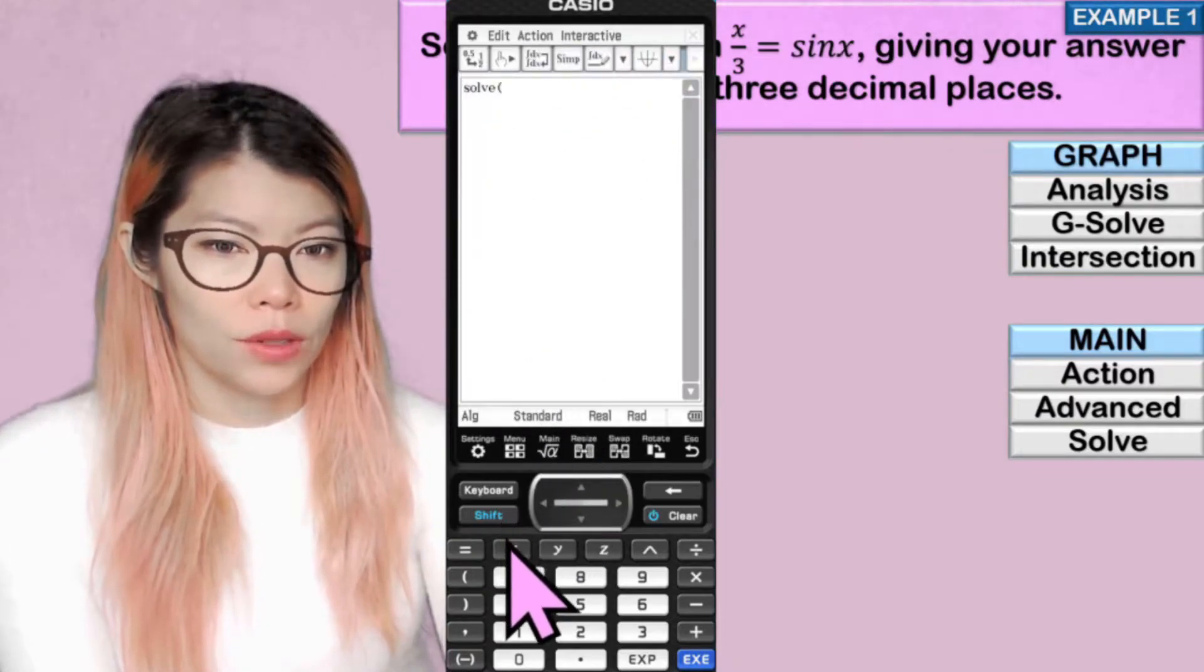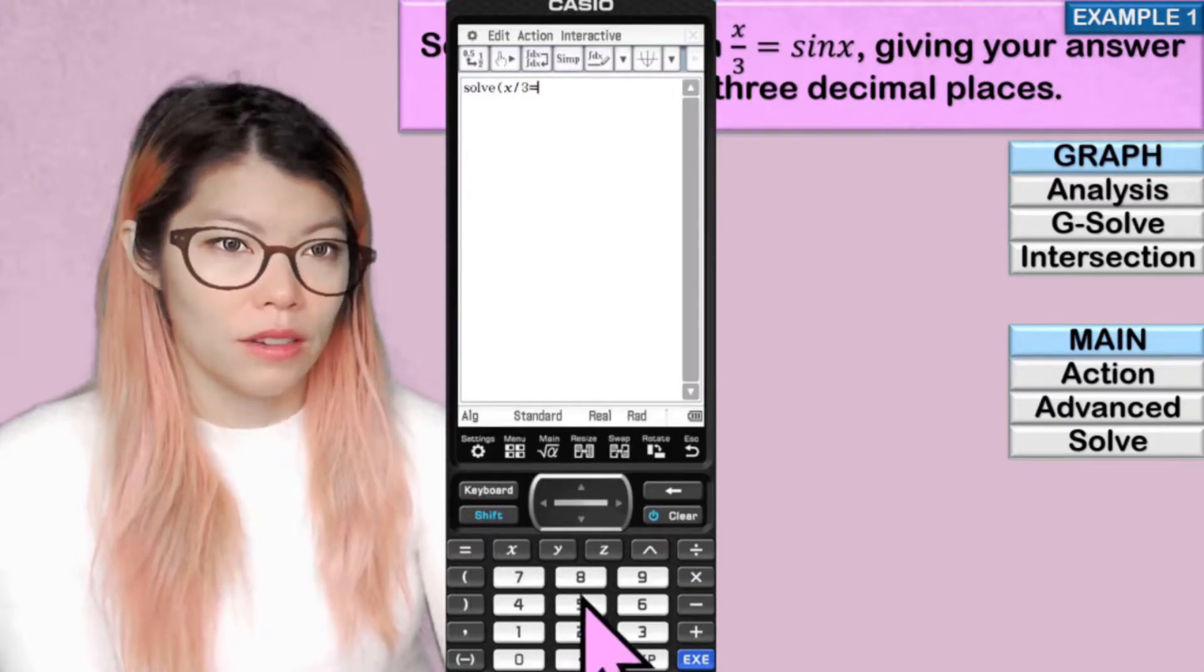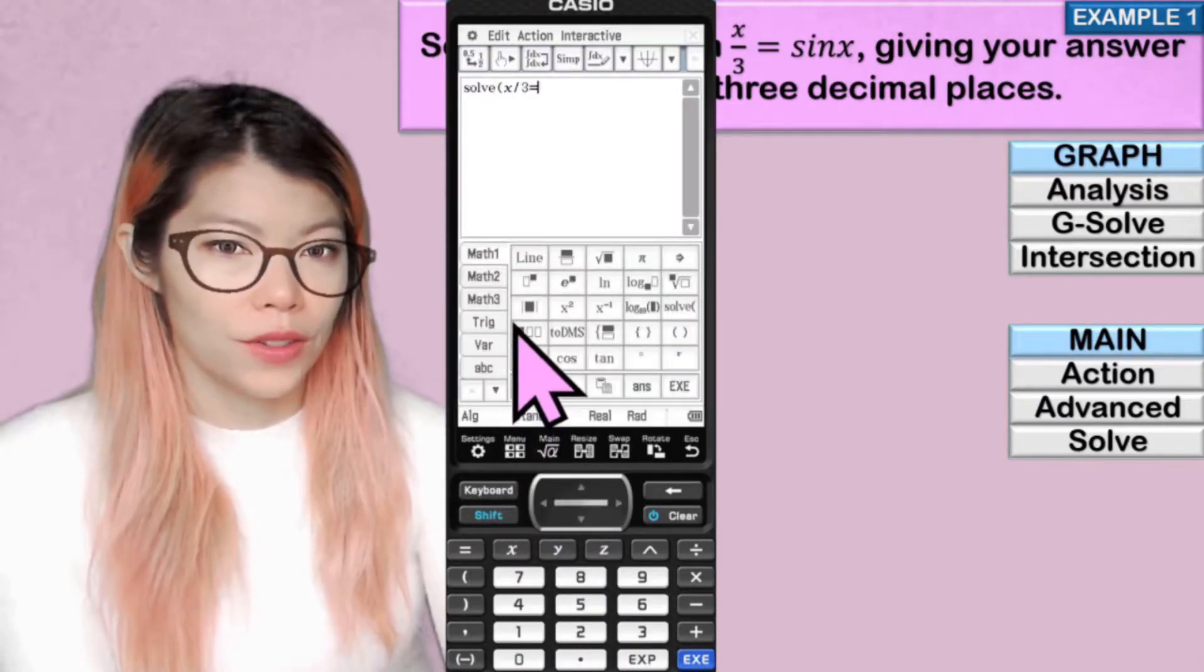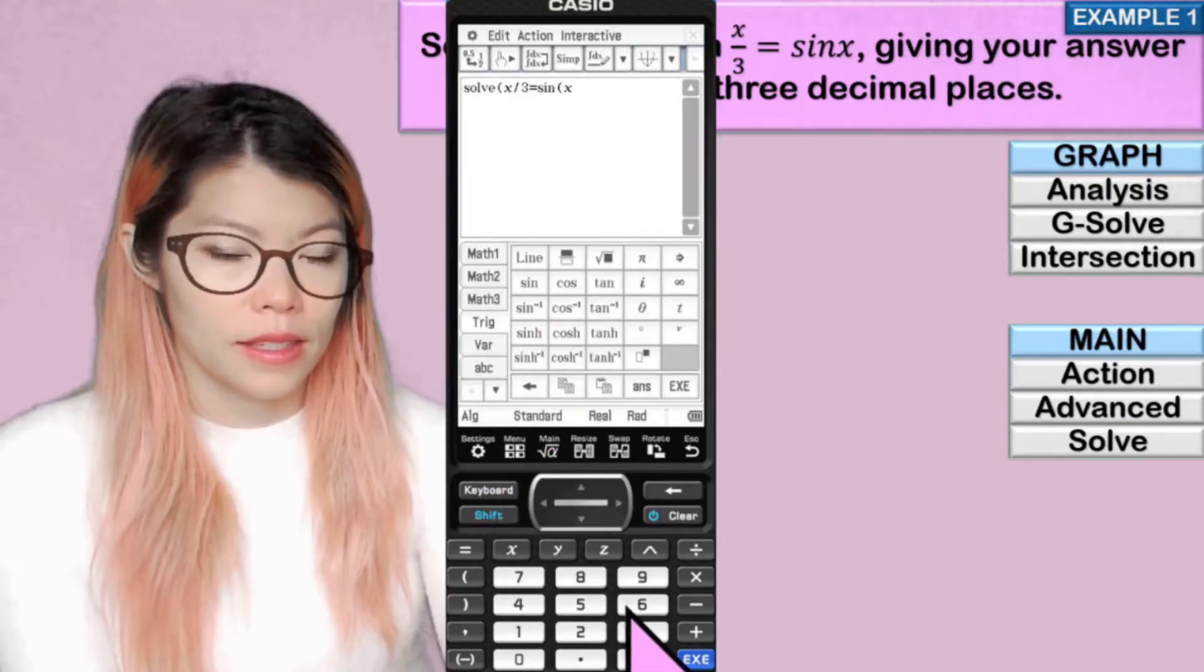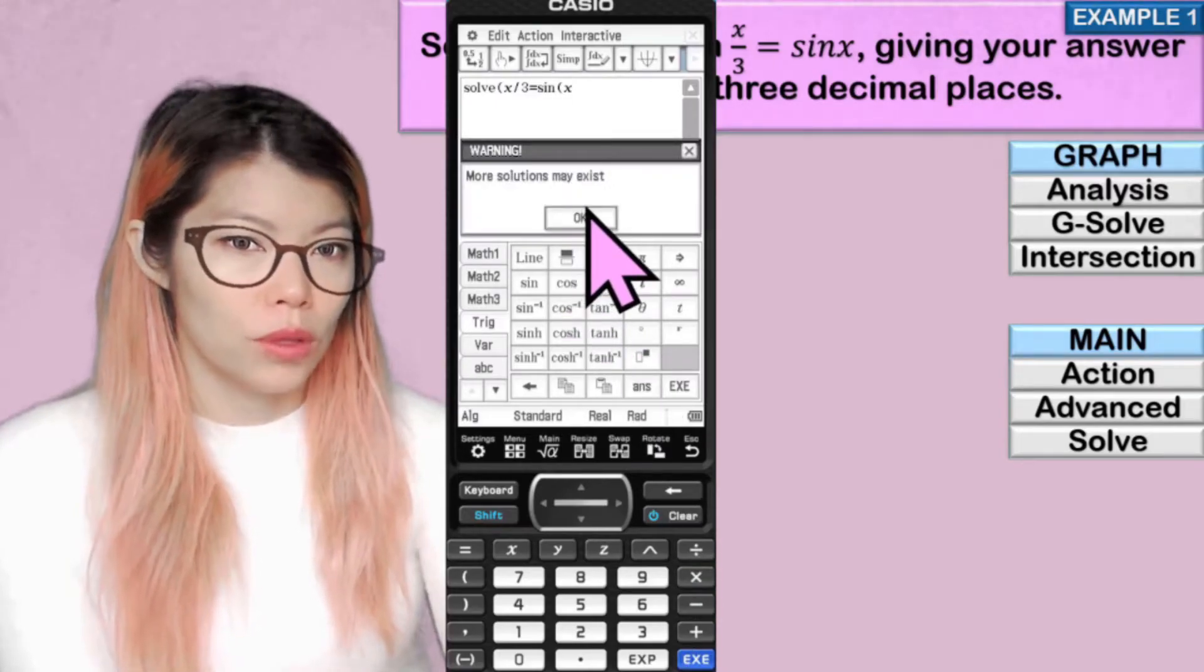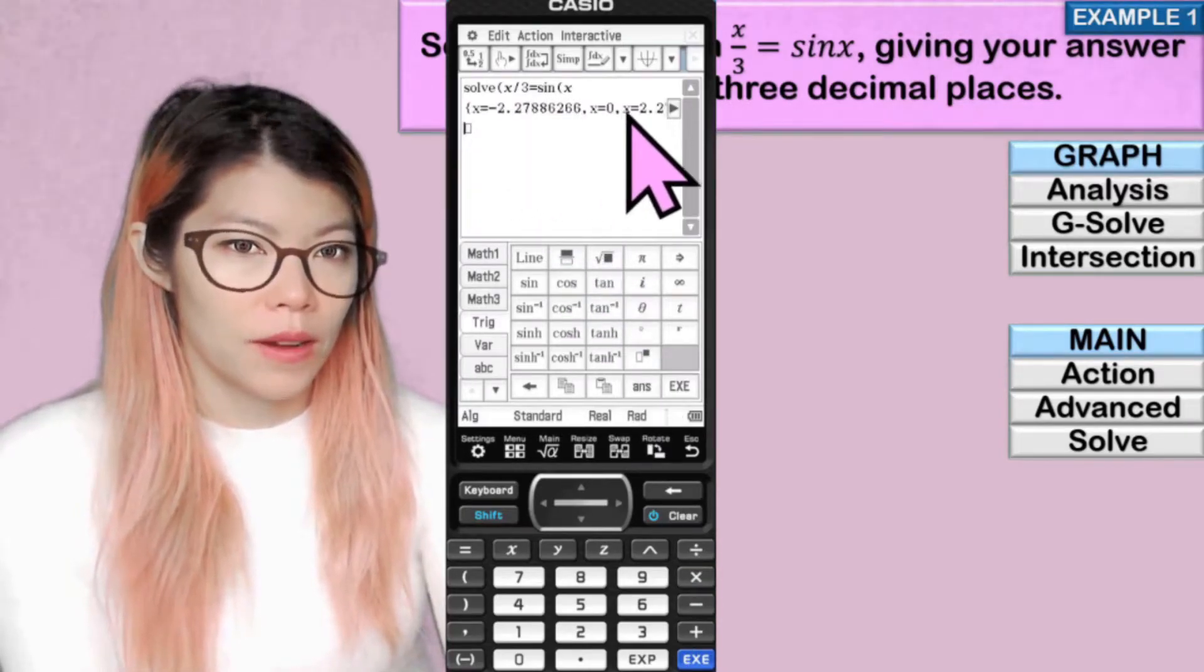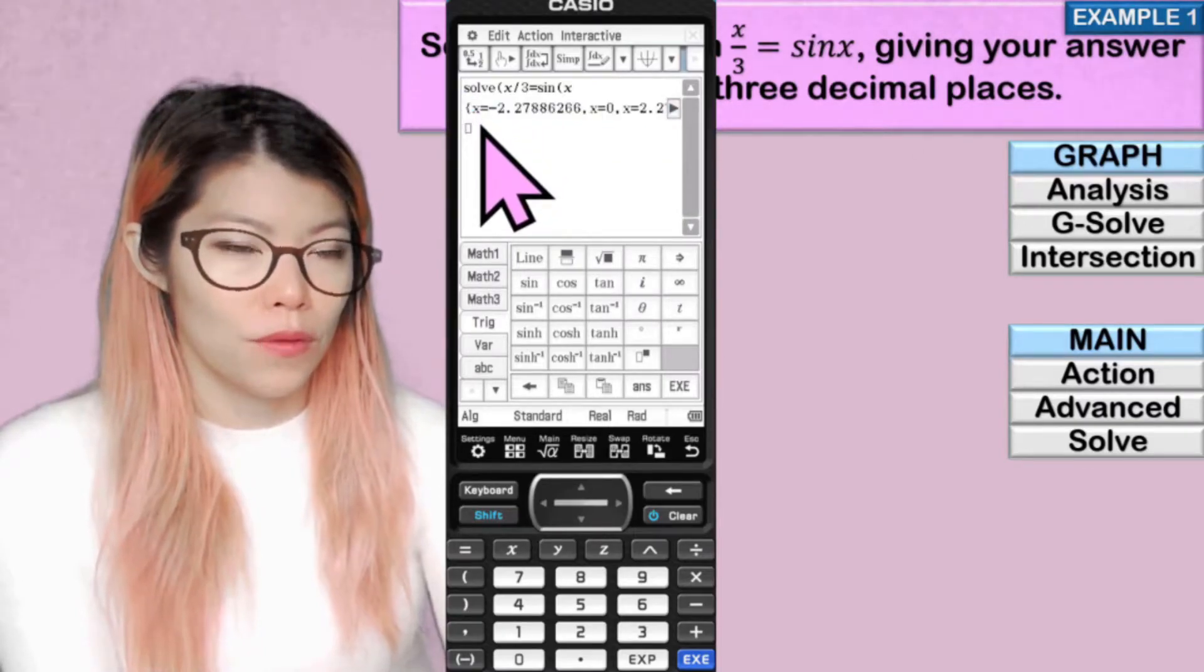And we type in our two equations. So x over three equals sign. To get sign, you go to keyboard, trig, sign, x, and enter. And it will tell you that there could be more solutions. Say okay. And now we have the solutions. To read them, just click right and left. So the same values as before.